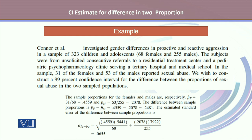So the sample proportions for the females and males are respectively given by P hat F for females, which is 31 divided by 68, equals 0.4559, and P hat M representing proportion for males, which equals 0.2078. And the difference between sample proportions is P F hat minus P M hat, which is given by 0.2481. The estimated standard error of the difference between sample proportions is obtained by the formula for the standard error and it's given here as 0.0655.